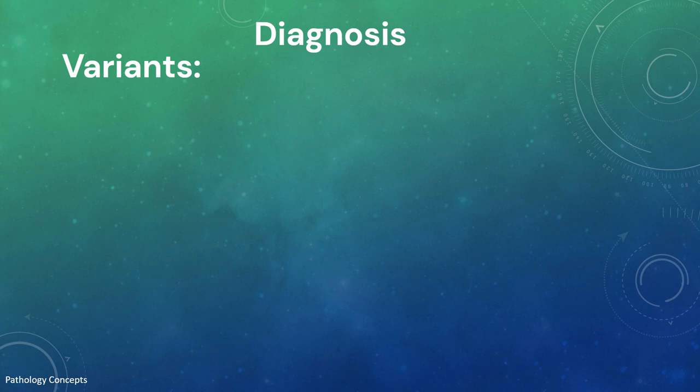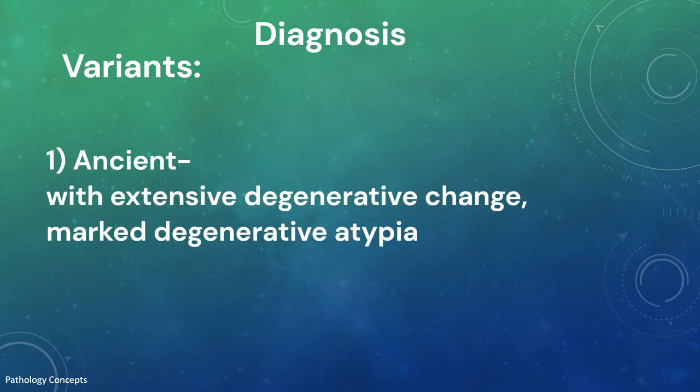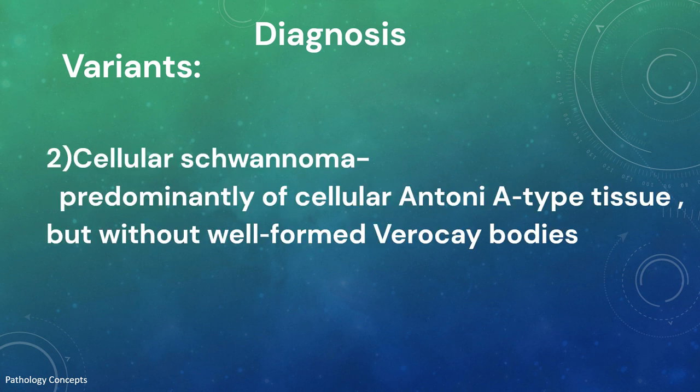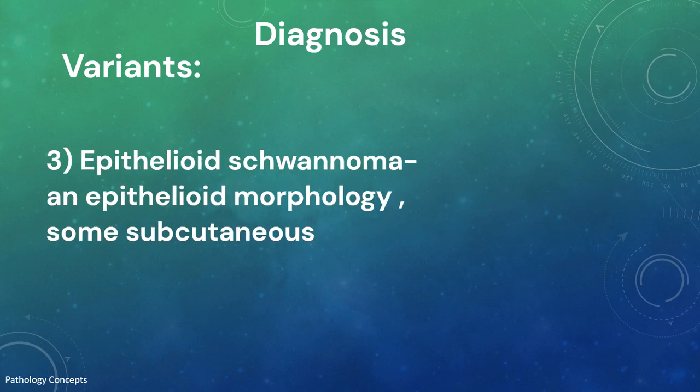There are a few histological variants of schwannoma. First is ancient schwannoma: tumors with extensive degenerative change that may show mild degenerative nuclear atypia, which should not be confused with malignant change. Second is cellular schwannoma: tumors composed predominantly of cellular Antoni A type tissue but without well-formed Verocay bodies, and occasionally containing small foci of necrosis.